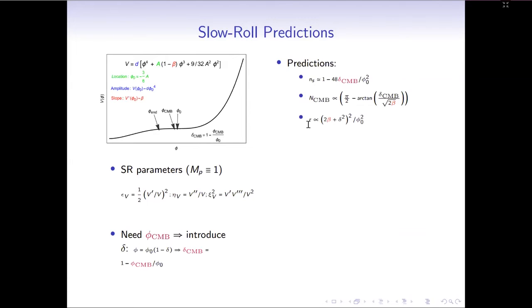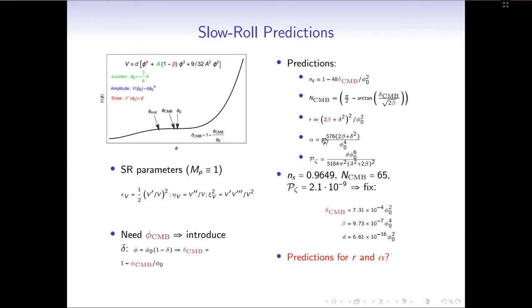Then we can also compute the tensor to scalar ratio, which is just epsilon squared, namely beta squared. And we can also calculate the running and the power spectrum by using the well-determined spectral index and taking some number of e-folds N_CMB around 60. Similarly, we can fix the three model parameters.